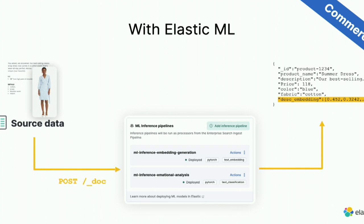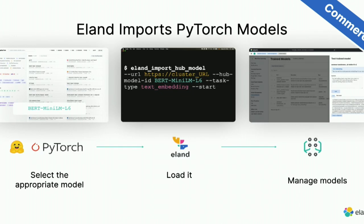If you use the commercial product or run on Elastic Cloud, you have access to Elastic machine learning nodes where you can upload your models directly into Elastic. Instead of a Python script in the middle, you just post your document to Elasticsearch and we generate the description embeddings at index time. We don't support binary/images yet at this stage. To upload your model, we have a script called Eland — there's a Docker version which is easier for Java developers — you choose the model from Hugging Face, load it to the cluster, start it, and you're good to go.